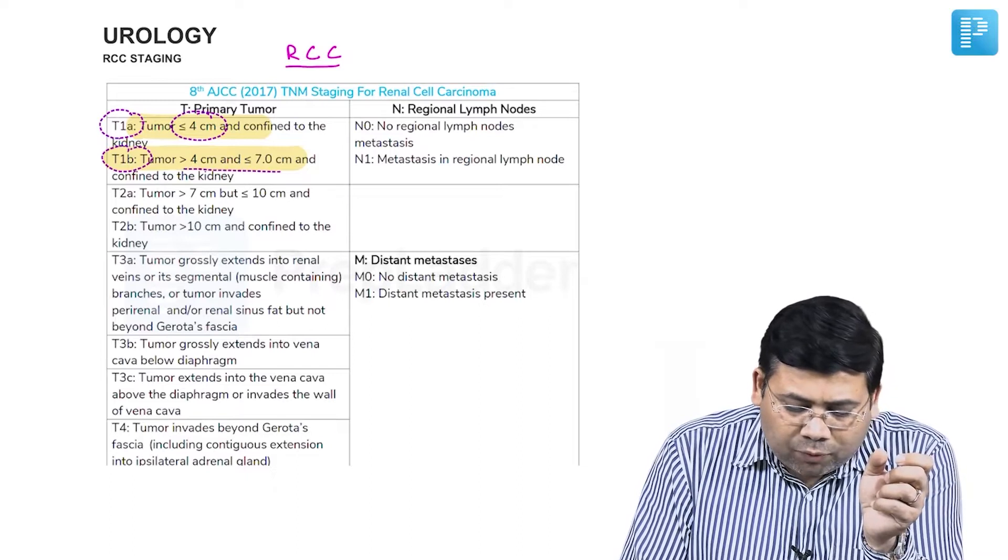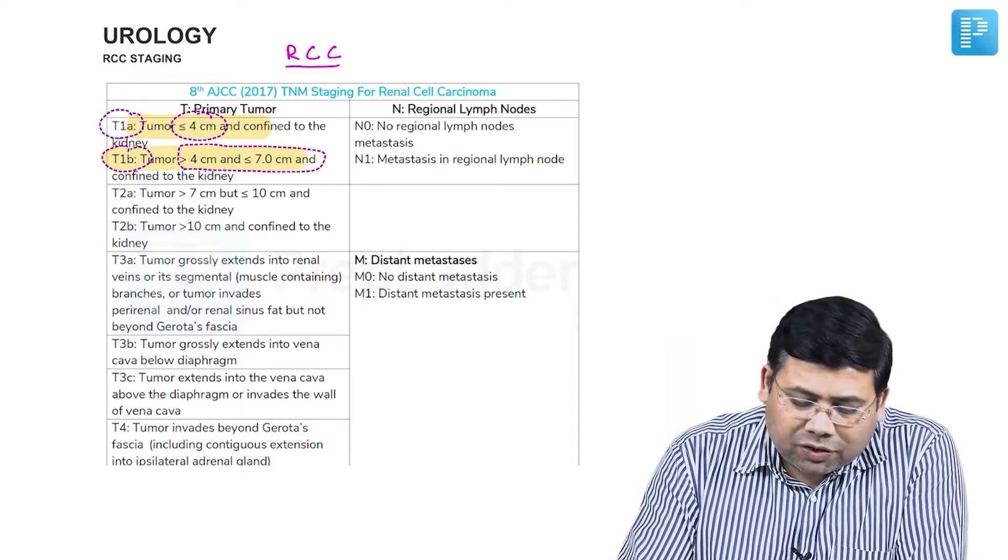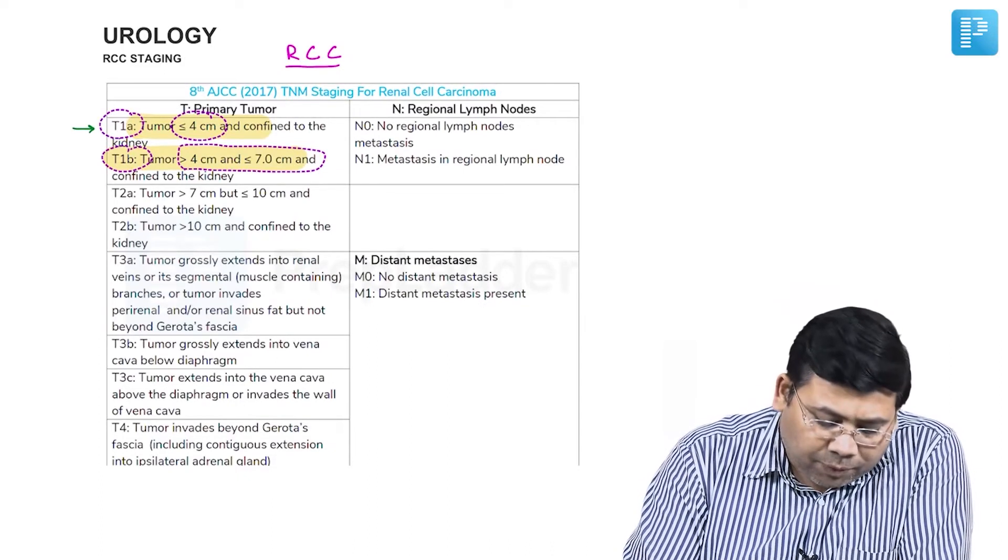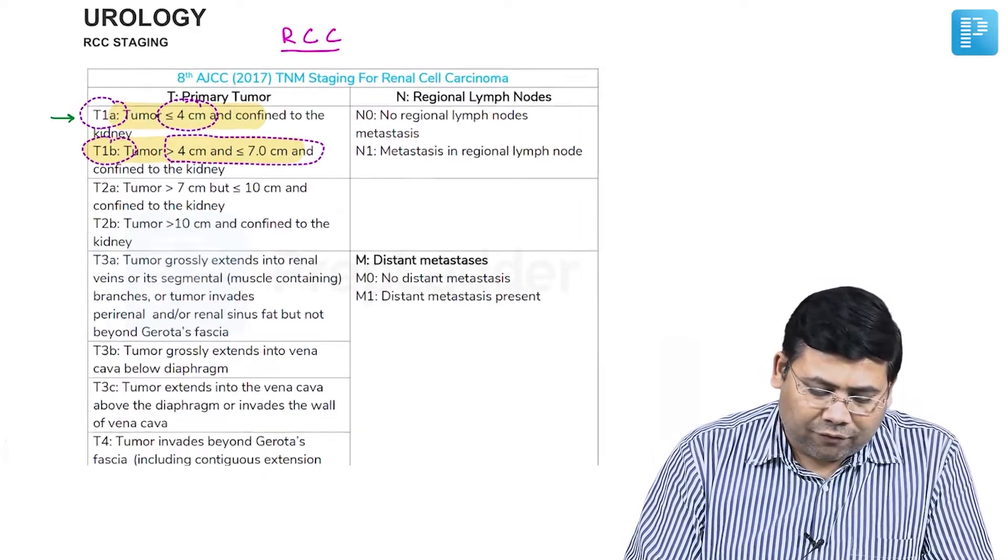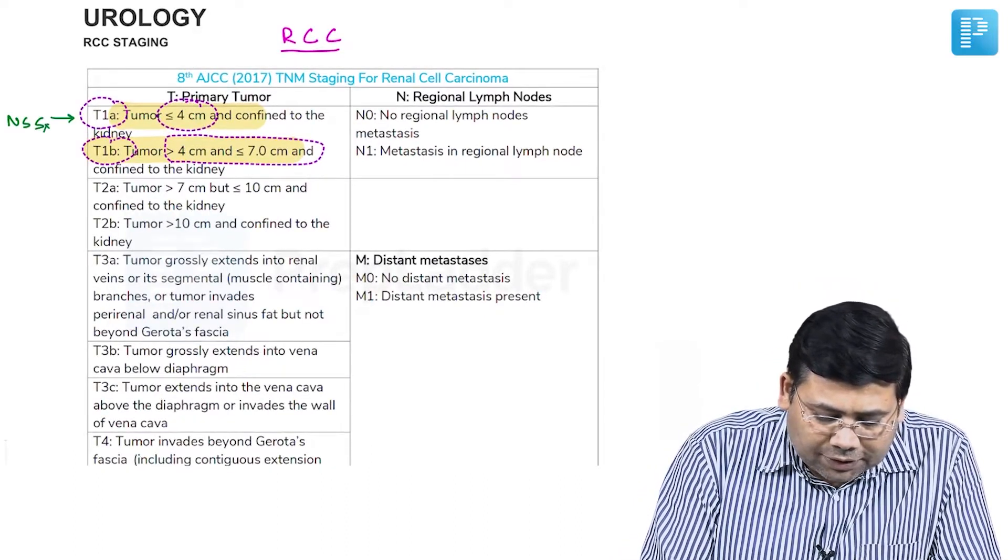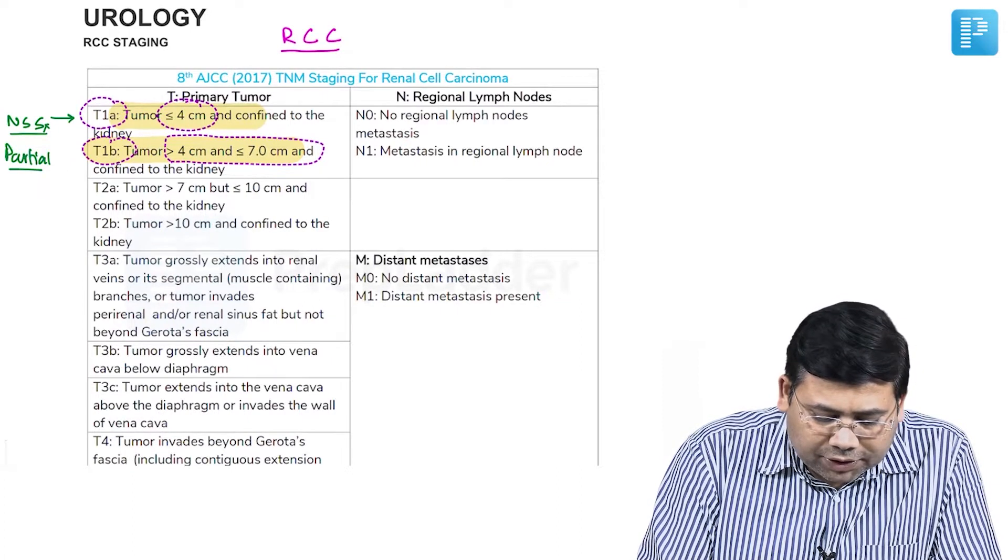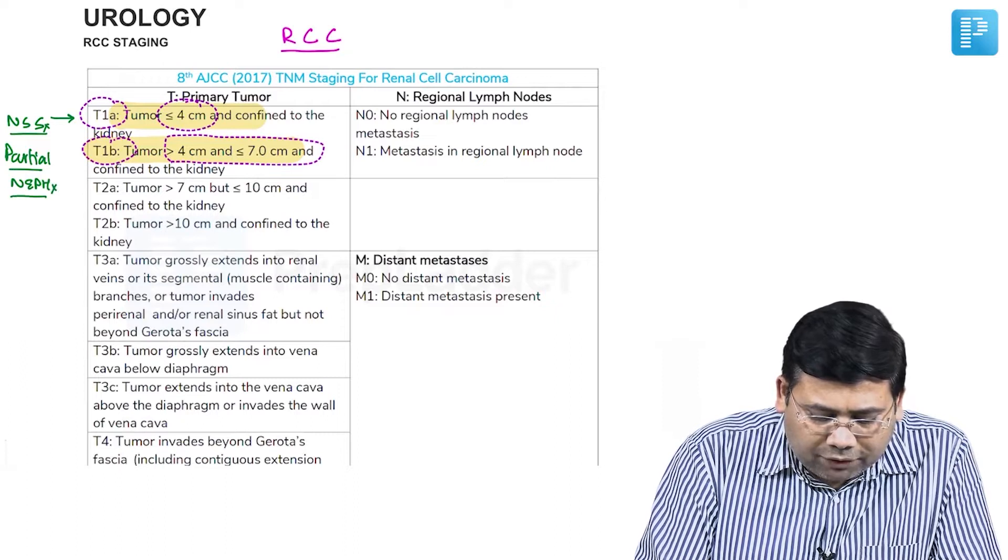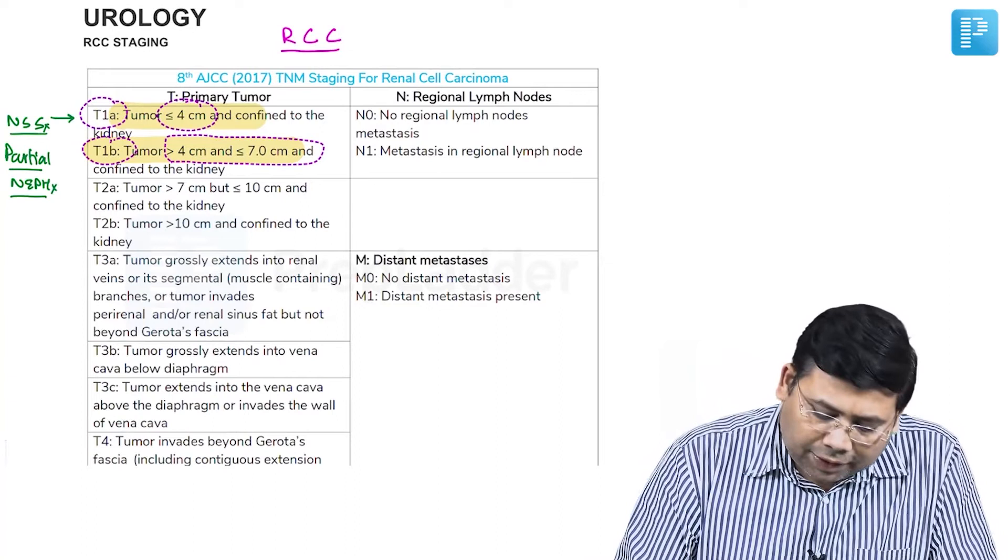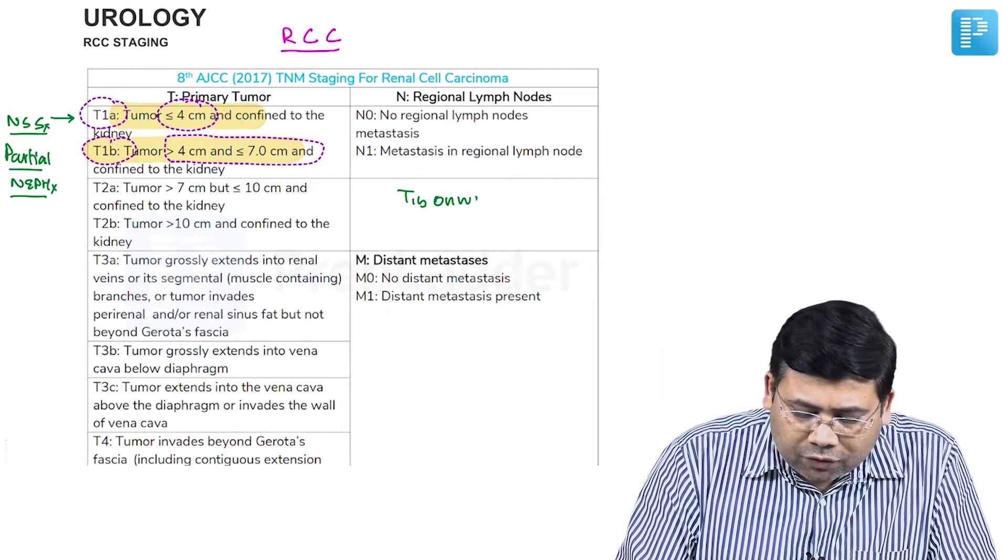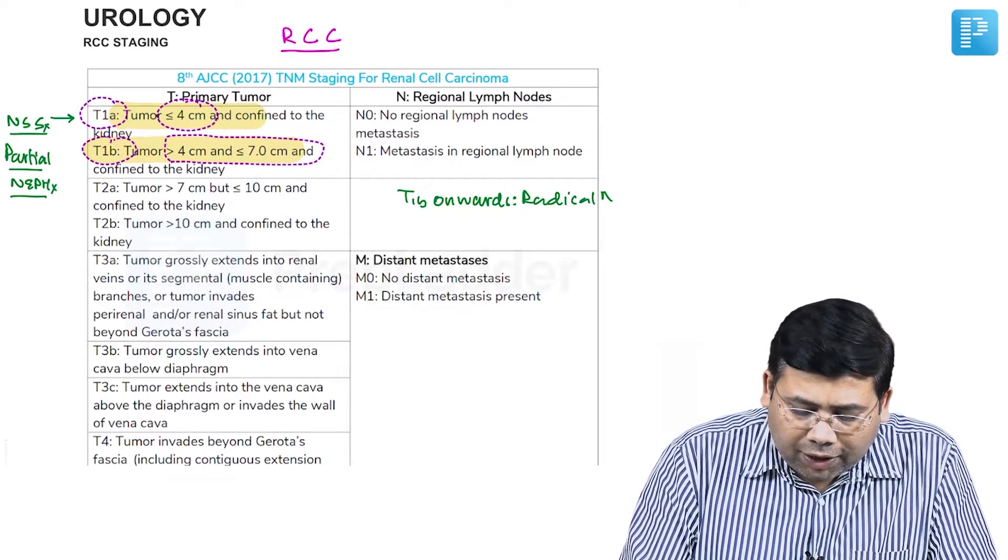T1b is a tumor more than 4 up to 7 centimeters. What is the significance? For T1a patients, we prefer nephron sparing surgery, which is partial nephrectomy. For T1b tumors, more than 4 centimeters onwards, we go for radical nephrectomy. One important thing to understand: this is not the only criteria for partial versus radical. We also have a score.